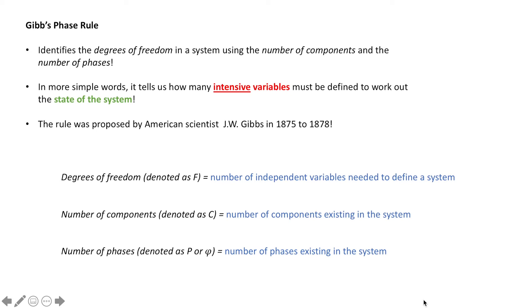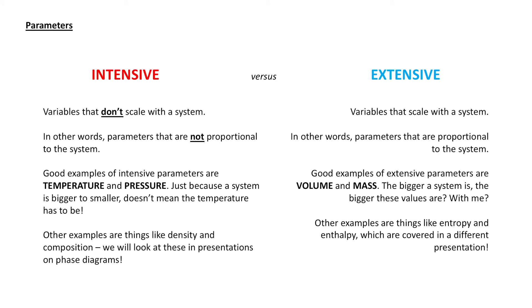When we talk about parameters, we're talking about either intensive or extensive parameters. Intensive parameters are those that do not scale with the system, so they are not proportional to the system. Good examples of intensive parameters include temperature and pressure. Just because a system is either bigger or smaller doesn't mean the temperature has to increase or decrease.